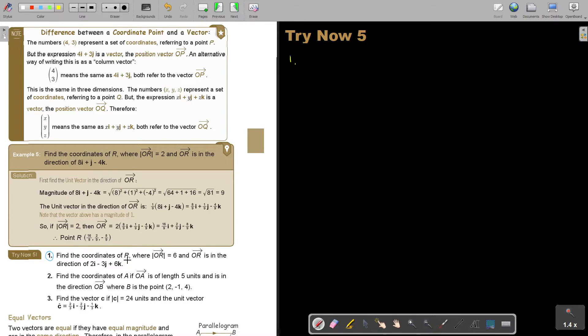Find the coordinates of R where OR is 6. And OR is in the direction. So first, we are going to find the magnitude of 2I minus 3J plus 6K.